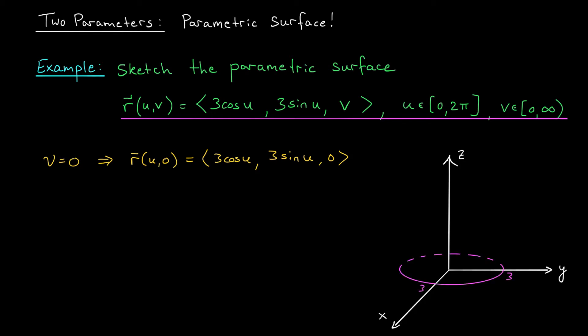What if instead we had picked V to be a different constant, say 1 half? Well, we would see the same circle except our Z value is going to shift up by 1 half. So I'd see a circle of radius 3 up here. And similarly, if I set V equal to 1 or 2 or π or whatever you like, I'm going to see that same circle just shifted up along the Z axis.